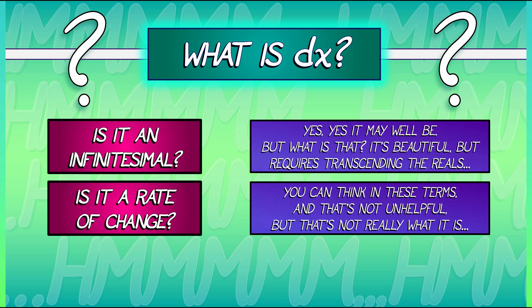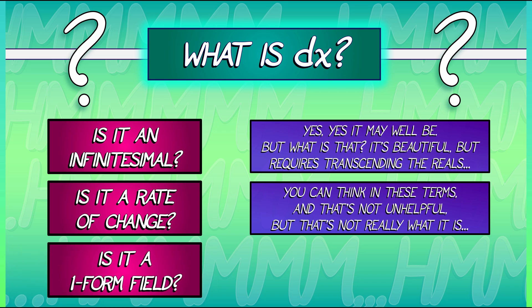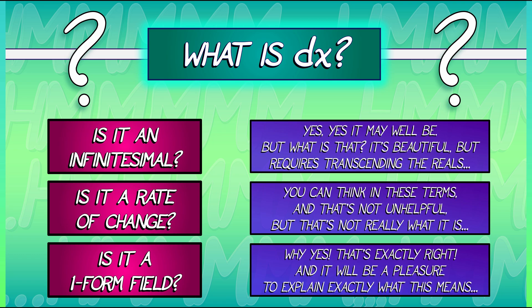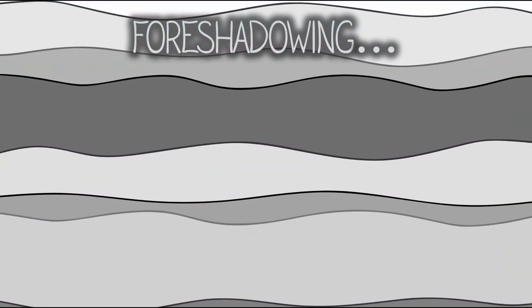So what else can we do? Is there anything else that we can use to say what DX is? What's that? I'm sorry. Did I hear you ask if DX is really just a one-form field on the real line? Why, yes. That's it. That's exactly right. But what exactly does that mean? Well, it will be a pleasure to explain that to you in the future.